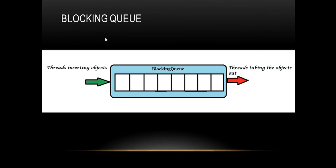Here is a diagrammatic representation of the blocking queue. You can see a blocking queue with an array inside it. On the left, a thread denoted by a green arrow is inserting objects into the blocking queue. The first set of threads will keep inserting objects until the blocking queue is full, at which point they will be automatically blocked by the blocking queue.